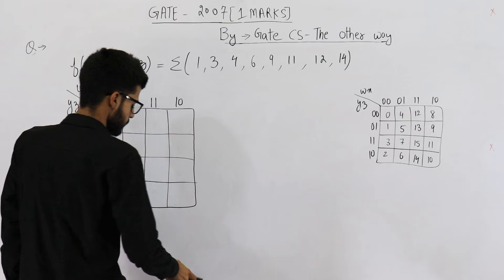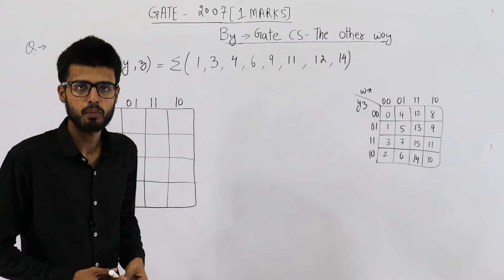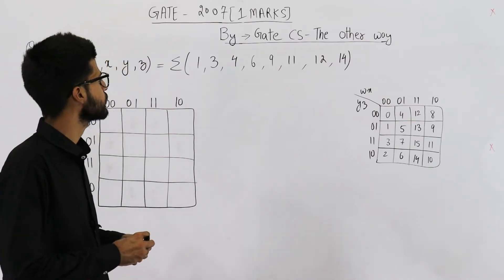So let us minimize this function to get to know that it's dependent on how many variables. So let us fill the K-map.